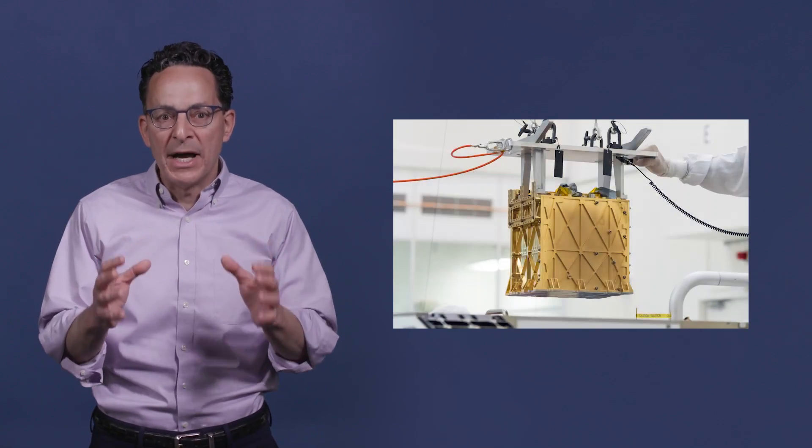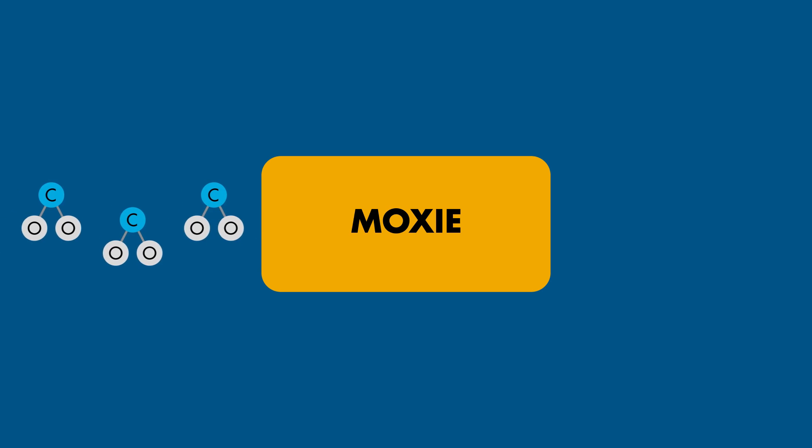MOXIE is a car battery-sized appliance that inhales CO2 from the Martian atmosphere and exhales oxygen.